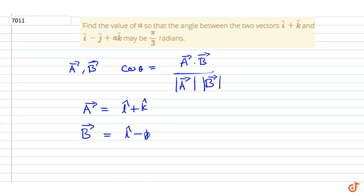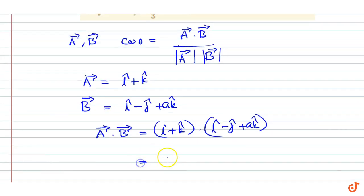And vector B equals i minus j plus ak. Now A dot B is equal to i plus k dot i minus j plus ak. This is equal to the coefficient of i cap is 1, 1 into 1 plus 1 into a, equal to 1 plus a.